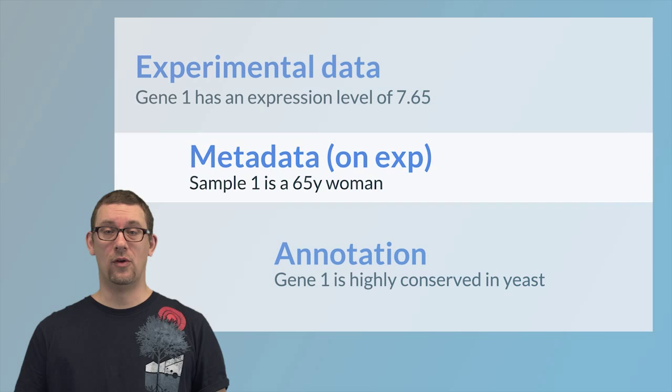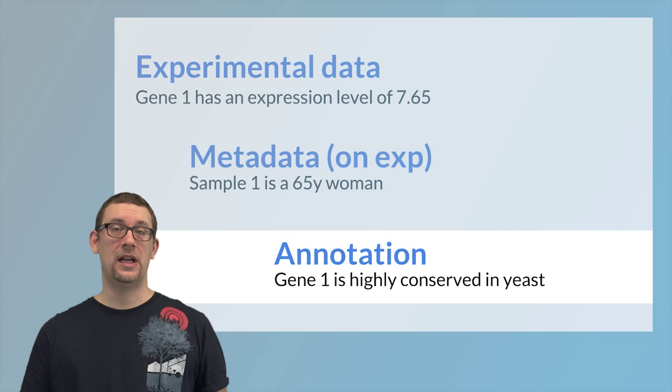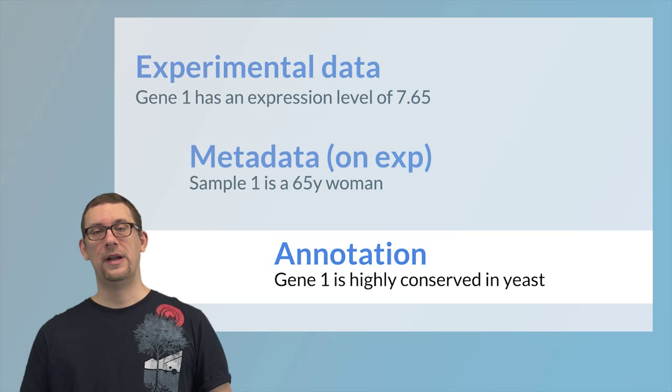And finally, we have annotation data. Annotation data is data we grab most often from big public databases that gives context to the experiment. It could be information about conservation, information about nearby genes, or local CpG content.